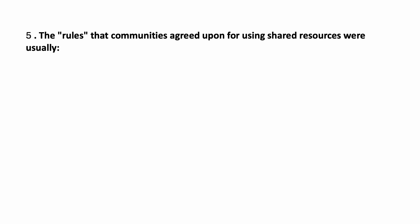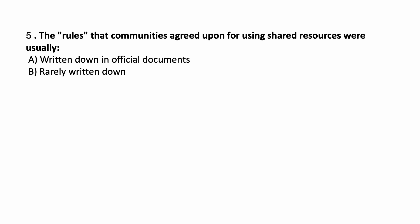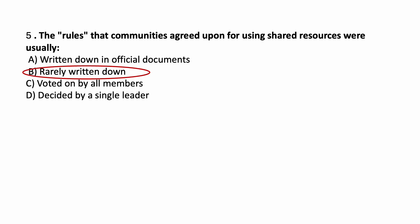The rules that communities agreed upon for using shared resources were — options: usually written down in official documents, rarely written down, voted on by all members, decided by a single leader. The correct answer is option B — rarely written down.